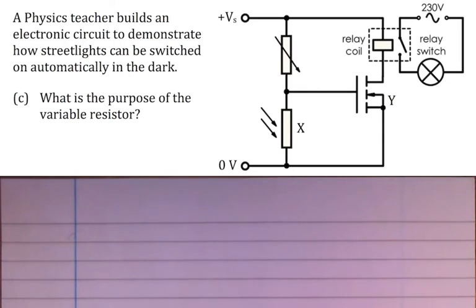Imagine, instead of an LDR in this position, if I was to change this LDR for, say, a thermistor, then the variable resistor would be setting the temperature at which the MOSFET then conducts.